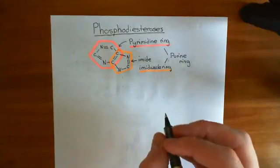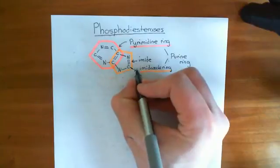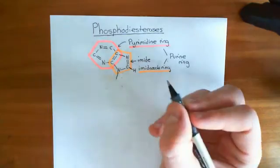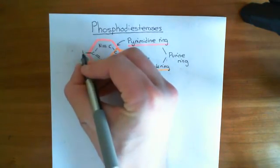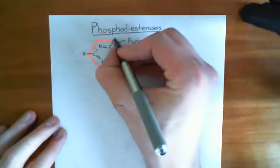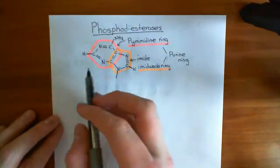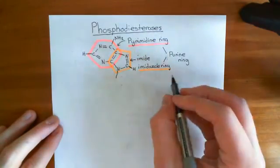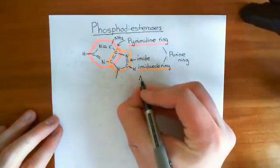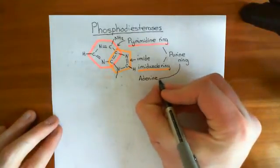Now we need to finish everything off. Some of these atoms aren't fully saturated, so we add a hydrogen there. This nitrogen is going to be connected to our ribose. This carbon has a hydrogen coming off it, and specifically adenine has an amino group coming off this carbon. So the purine ring with these specific three groups in those positions is known as adenine — the organic base adenine.